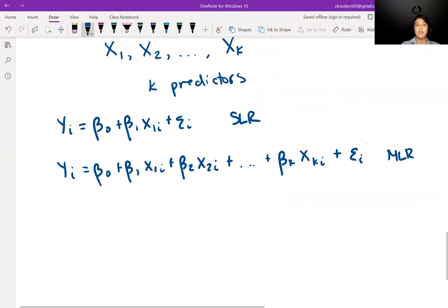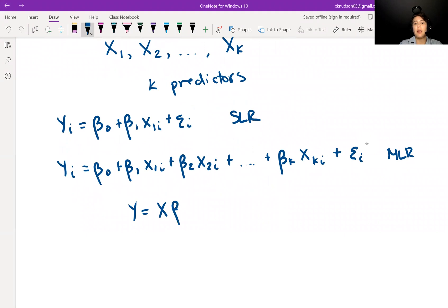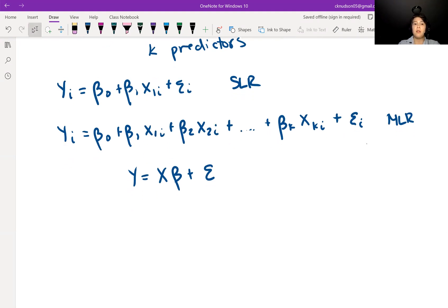Another way that we can write this is y equals x beta plus epsilon. Just like we saw with simple linear regression, now the fact that it's multiple regression is hidden inside of the x's and inside of beta. So now x is no longer just n by 2, which it was in the simple linear regression case, now it's n by k plus 1. Beta has dimension k plus 1. Epsilon still has dimension n by 1, and y still has dimension n by 1.